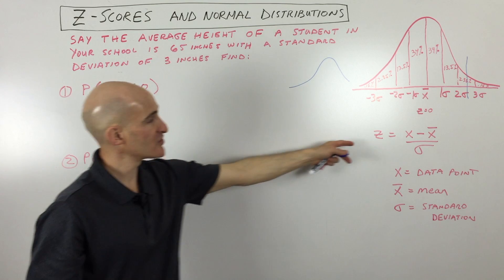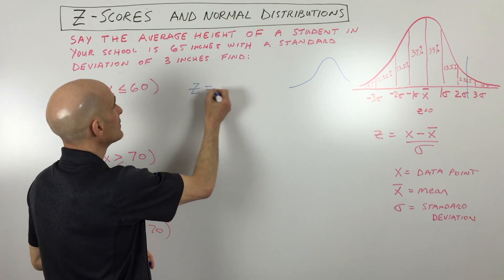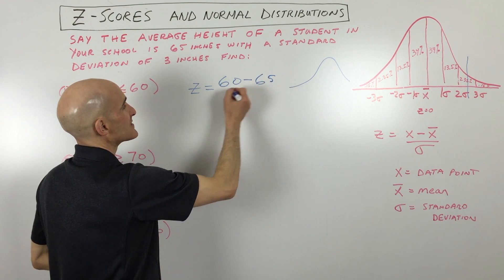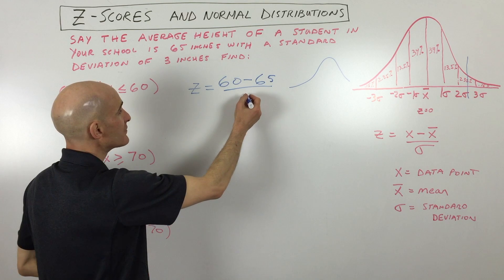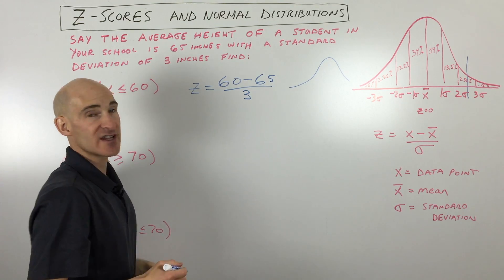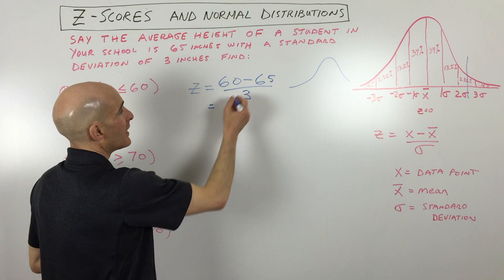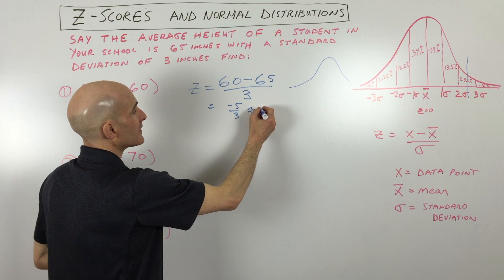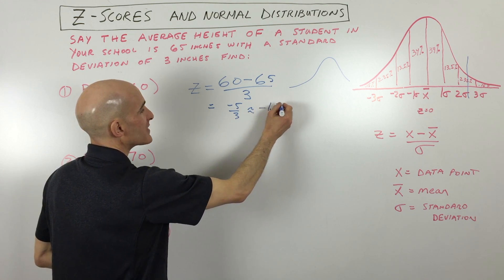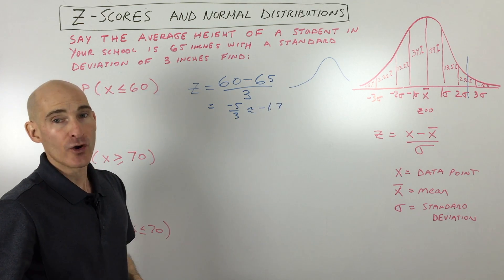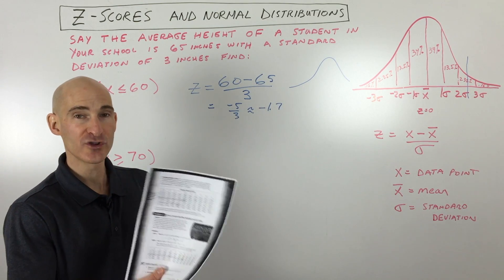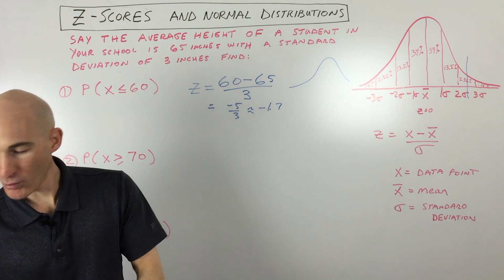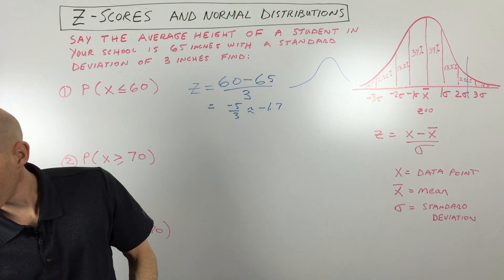We're going to use our z-score formula: z equals 60, which is our data point, minus the mean of 65, divided by 3, which is our standard deviation. If we calculate that out, we get negative 5/3, which is approximately negative 1.7 rounded to the tenths. You can take a look at a standard normal distribution table, and at negative 1.7 you can see that it's 0.0446.